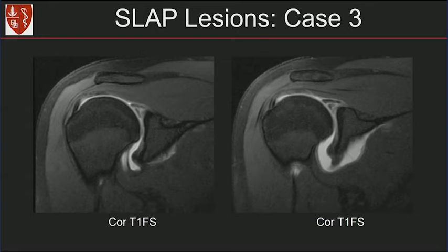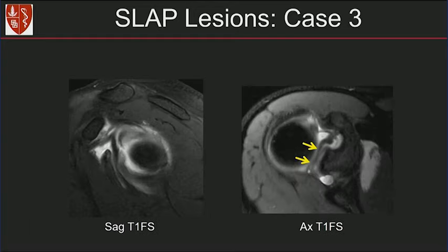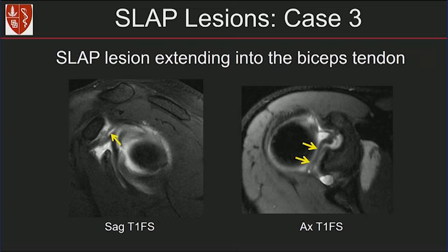Another case on coronal MR arthrogram images: abnormal signal in the superior labrum, with the right image showing contrast going into the biceps anchor. On the same patient's sagittal and axial images, look at how wide the signal is separating the superior labrum from the glenoid. The sagittal image shows abnormal signal going into the biceps tendon. This is reported as a SLAP lesion extending into the biceps tendon.